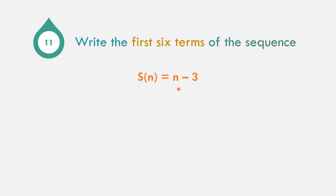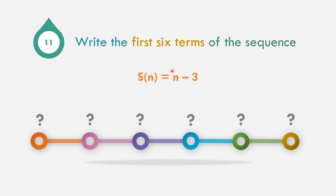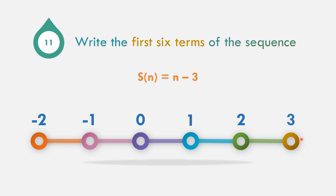If s(n) equals n minus 3, we need to identify the first six terms. We replace n by 1 through 6: 1 minus 3 is negative 2, 2 minus 3 is negative 1, 3 minus 3 is 0, 4 minus 3 is 1, 5 minus 3 is 2, and 6 minus 3 is 3. The pattern adds 1 each time: negative 2, negative 1, 0, 1, 2, 3.